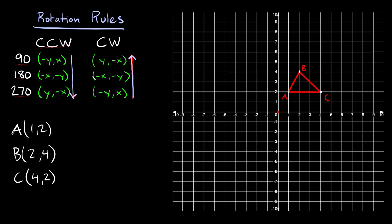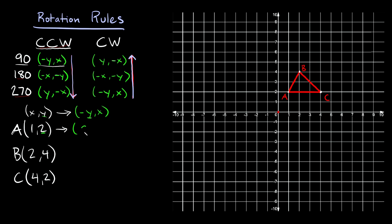Let's say we're asked to rotate this triangle 90 degrees in the counterclockwise direction. Coming over to the rules, that means I'm going to use the rule: negative y, x. Our points are in the form (x, y), and we're going to transform them using that rule. For point A at (1, 2): we write the y-coordinate first, which is 2, but we change its sign to get negative 2, and then write the x-coordinate, which is 1. So A transforms to (−2, 1).